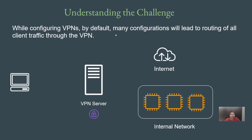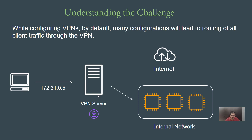Generally, whenever a VPN is configured, by default the routing configuration will lead to all of the client traffic being routed through the VPN. In many popular VPNs, this is one of the standard configurations. For example, you have a client on the left, a VPN server, an internal network, and the internet. Whenever a client sends a request to private IP addresses of instances in the internal network, this will be routed through VPN to the appropriate destination. However, whenever the client sends a request to a public website like google.com, that request will also go to the VPN server and from there be routed to the appropriate destination. So all of the client traffic is being routed at a VPN server level.